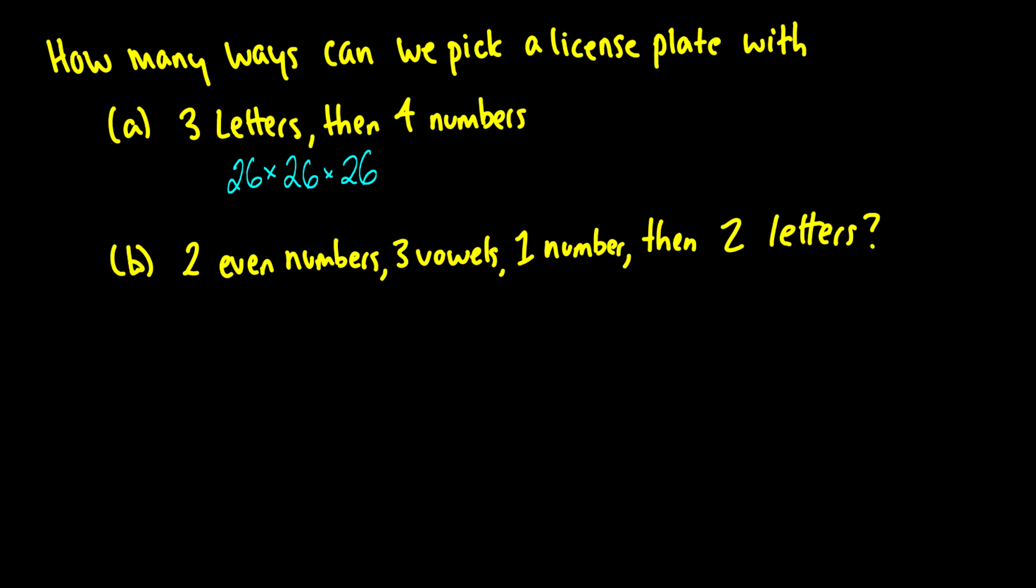0, 1, 2, 3, 4, 5, 6, 7, 8, 9. So we have 10 numbers for the first number. We have 10 numbers for the second, third, and fourth. So we have this number here, which I'm going to shorten to 26 cubed times 10 to the 4, and that is how many options you have for a three-letter, four-number license plate. So you're not running out of license plate numbers anytime soon.